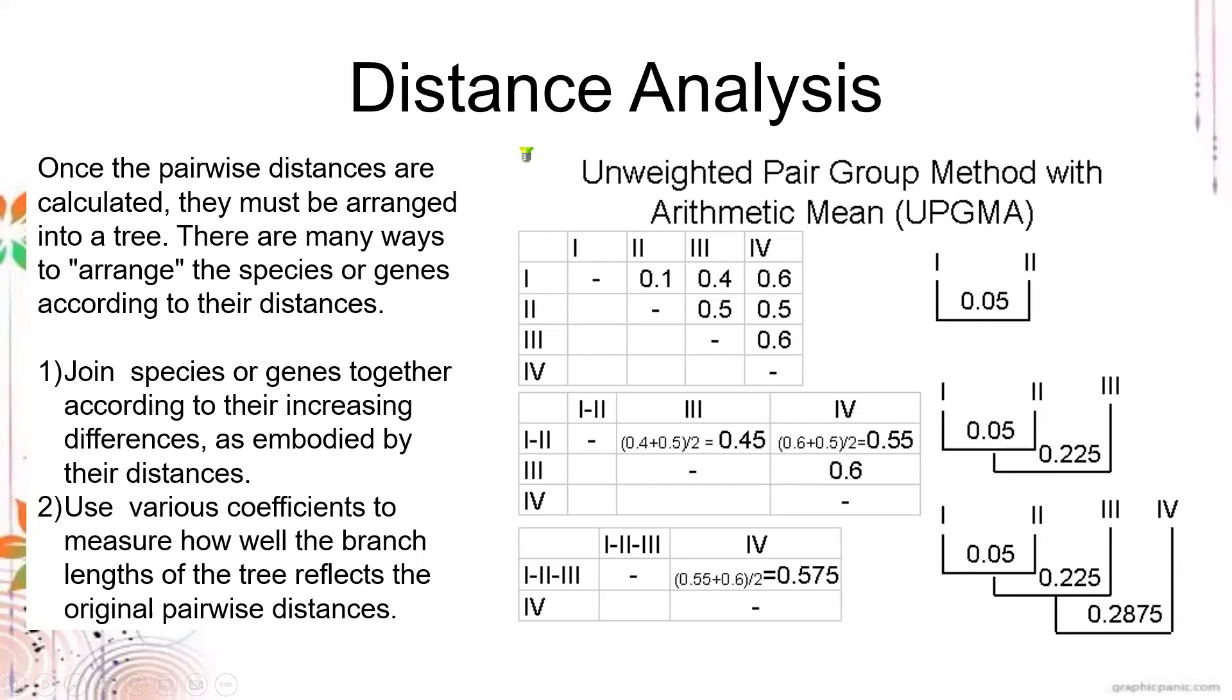That is how you build your tree using distance analysis. This is by the unweighted pair group method, UPGMA. The pairwise distances are based on the calculation. You join species or genes together according to their increasing differences. You can use various coefficients to measure how well the branch lengths of the tree reflect. We can apply the model here on the neutral theory of evolution to generate an appropriate distance between sequences.